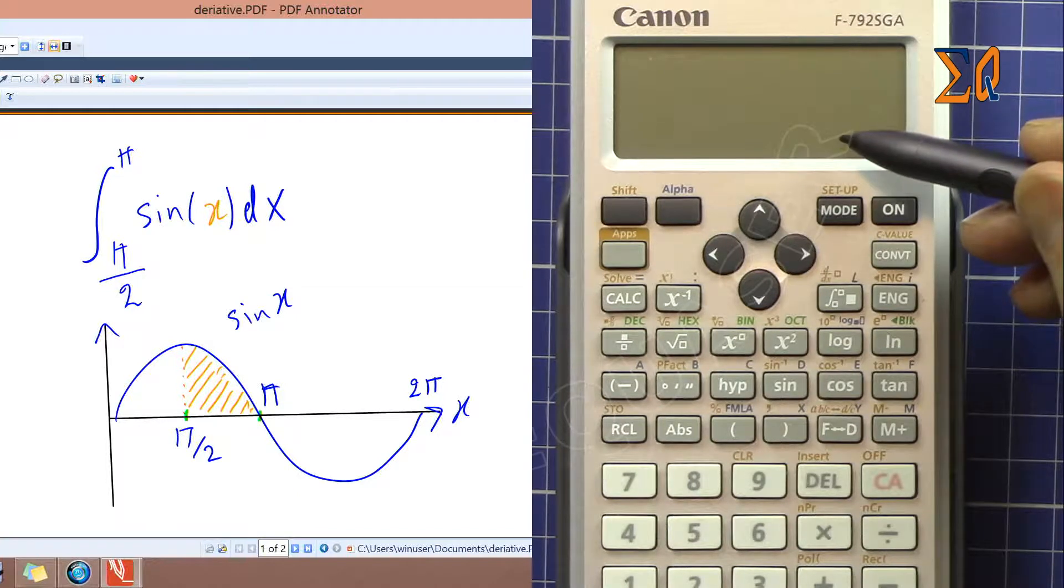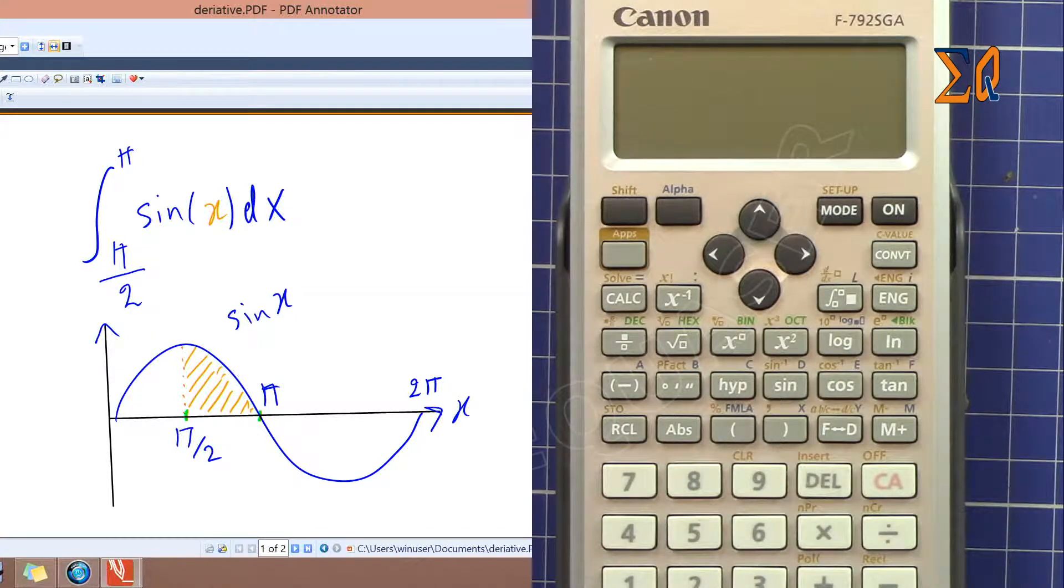Here we have a function which says integrate the sine of X from pi over 2 to pi, as you can see on the plot. When you do the integral you are actually finding the value under the curve. In this case, from pi over 2 to pi, this area under the curve.